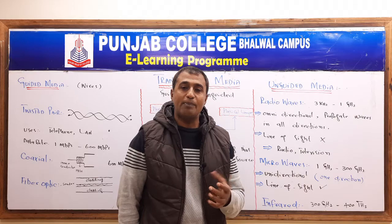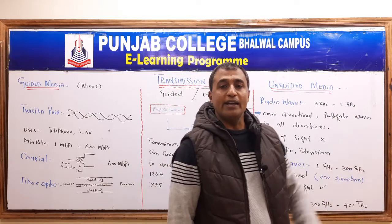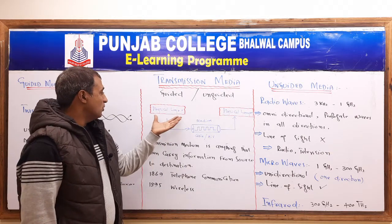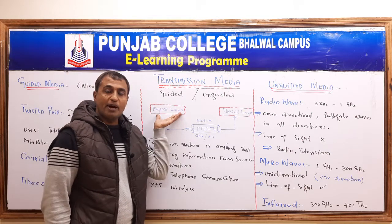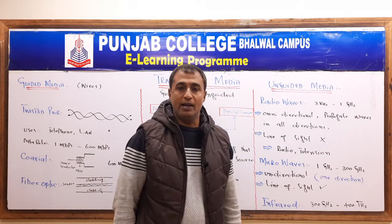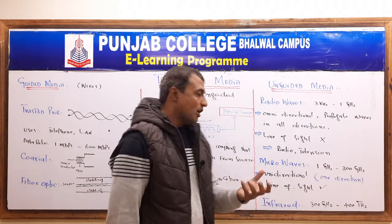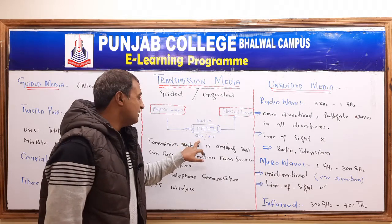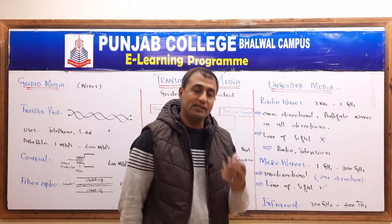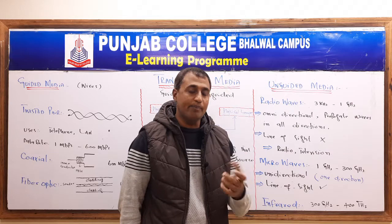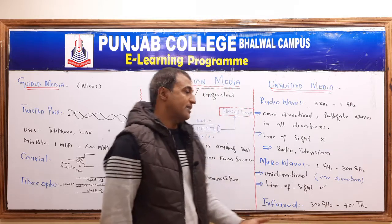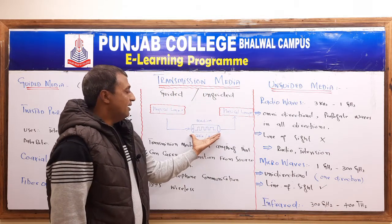How does your data travel from one place to another place? Students, if you look at the picture, in the OSI model and TCP/IP protocol, when our data reaches the physical layer in the form of bits, then we send it over a medium. Now, what medium can that be? It can be a wire, or with the help of wireless signals, we can also send our data.